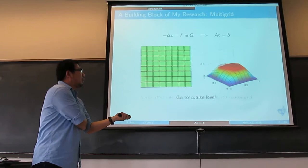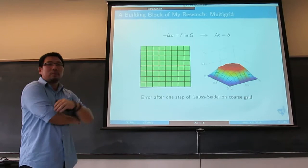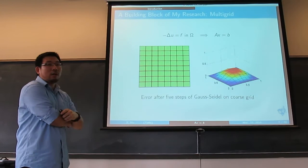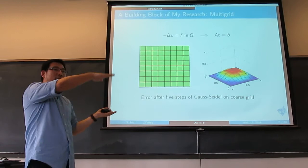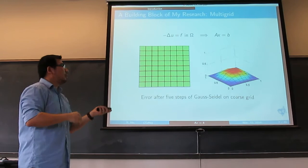Now on the coarse grid, I do Gauss-Seidel again — one step. The profile becomes smoother, and the magnitude also goes down a little bit. After five Gauss-Seidel steps, the magnitude is much smaller and the whole error profile is like a smooth sine or cosine function.